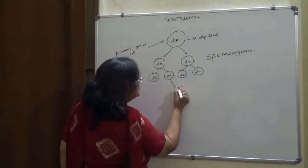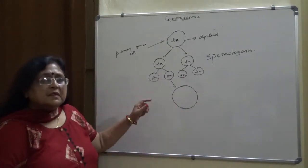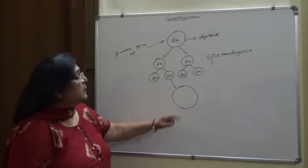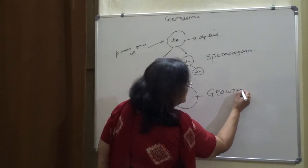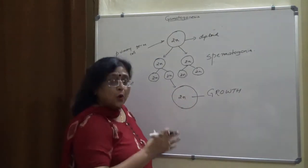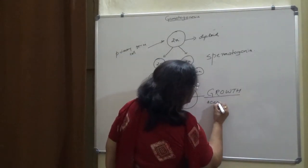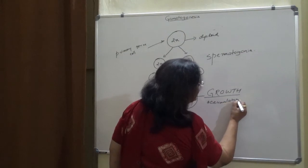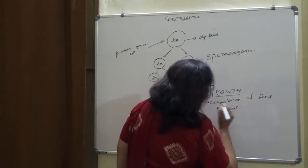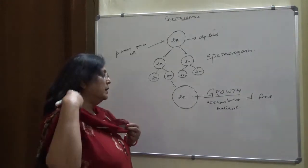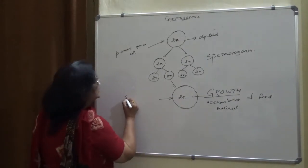The spermatogonia enter the second phase, that is the growth phase. In the growth phase there is no division, but instead the cell grows in size by the accumulation of food material. The cell will only grow in size and will not divide. The food material is provided by the Sertoli cells in human beings.